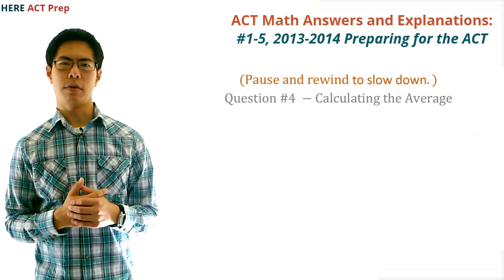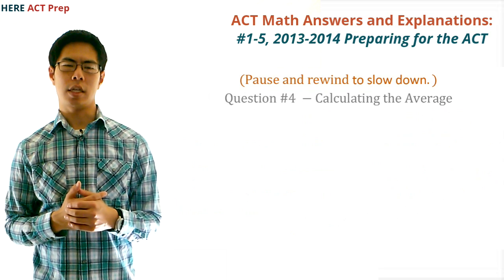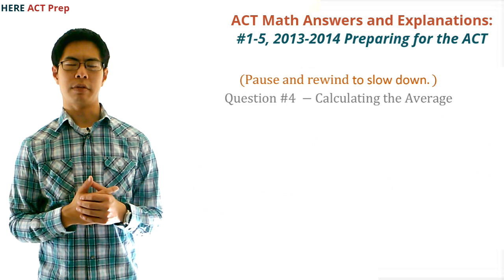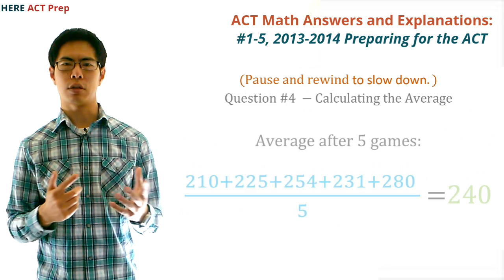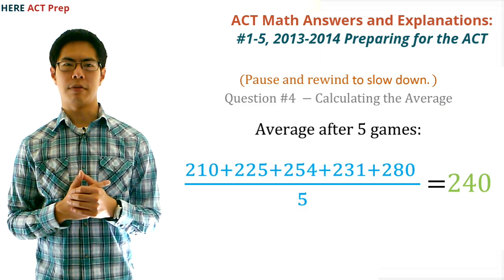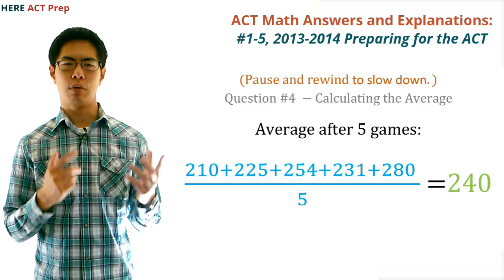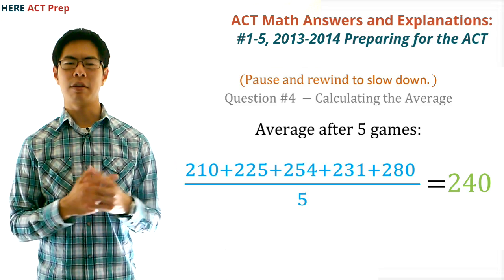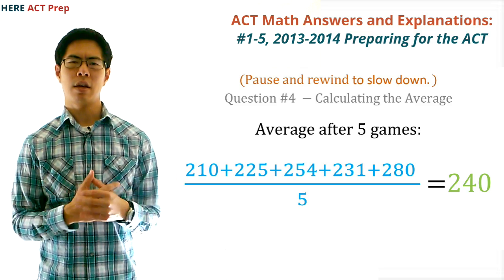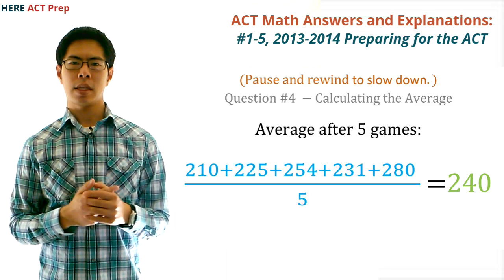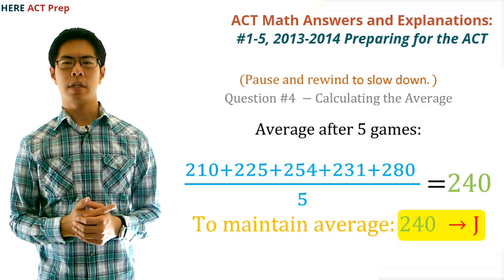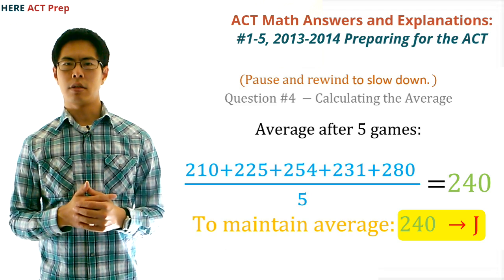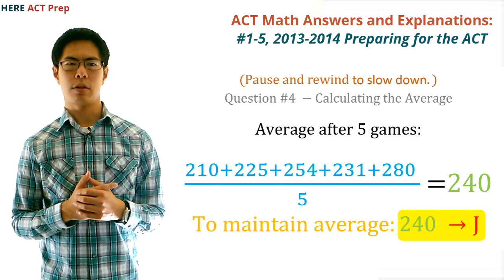Question number four. The concept this question tests is calculating the average. The first thing we need to do is find the average of the first five scores, which is the sum of the scores divided by the number of games: 210 plus 225 plus 254 plus 231 plus 280, divided by 5, which equals 240. If he wants to maintain his exact average, he simply needs to bowl that same score for the next game. So the answer is J, 240.